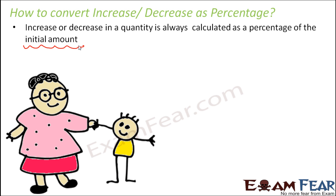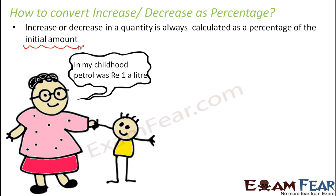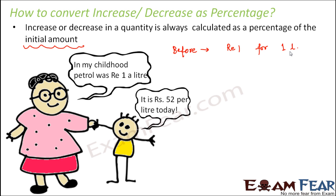Now let's look at this mother-daughter duo. The mother says that in her childhood, petrol was rupee 1 per liter — that means the cost of one liter of petrol was rupee 1. The daughter says that it is rupees 52 per liter today. So what has happened? The price has increased over a period of time.